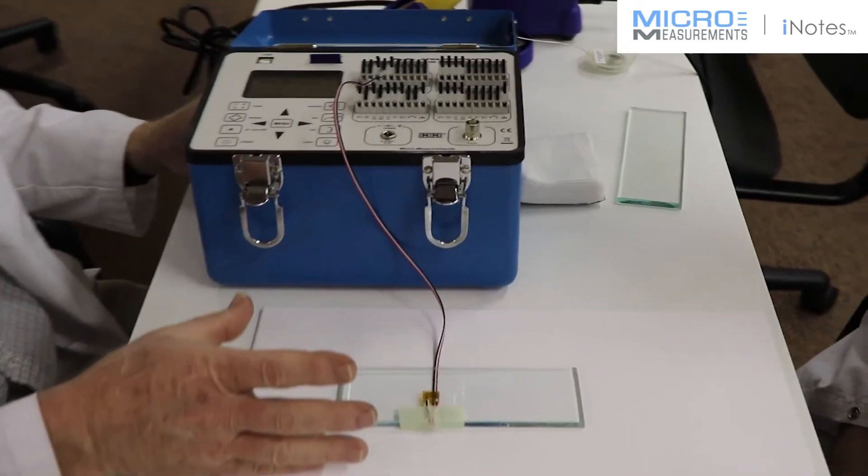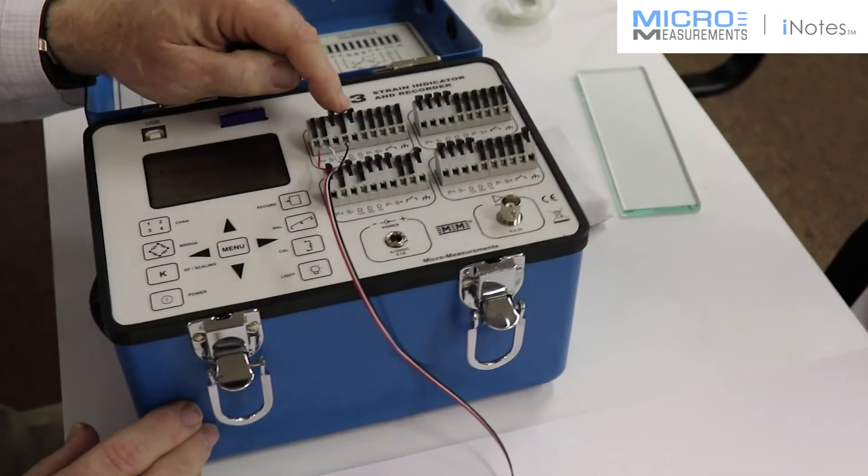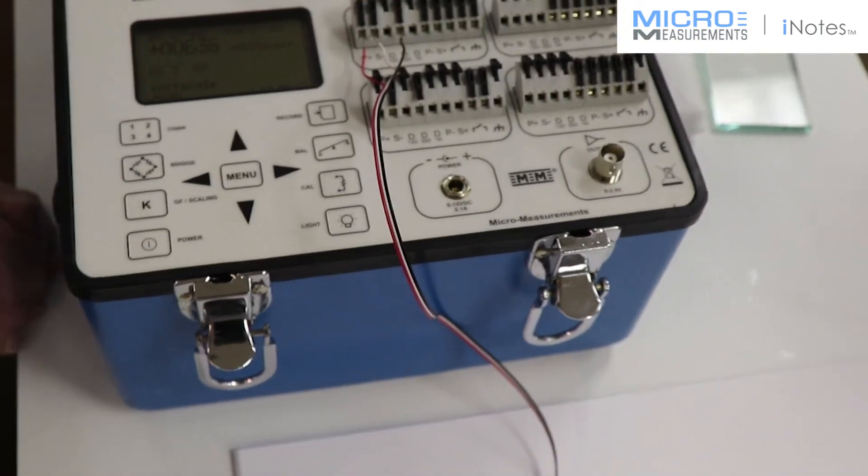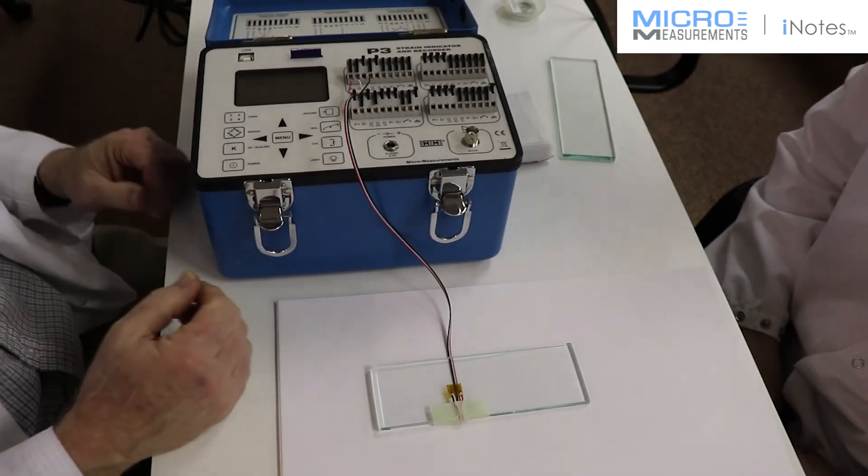Okay, at this point, we've wired up. This is a three-wire quarter bridge to the P3. It's a 350-ohm strain gauge, which is important. On a piece of glass, you want to have a high-resistant strain gauge so you don't have problems with grid self-heating. We've hooked it up to the P3.